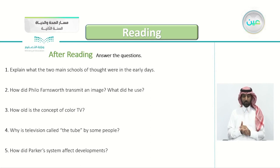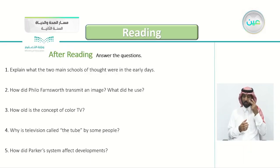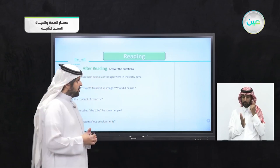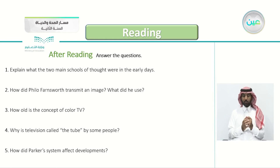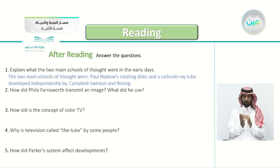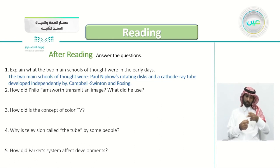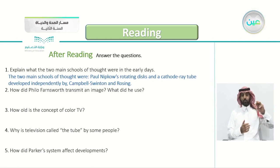Now for the after-reading questions. Question one: explain what the two main schools of thought were in the early days. The two main schools of thought were: first, Paul Nipkow's rotating discs supporting a mechanical television system, and second, the cathode ray tube developed independently by Campbell Swinton and Rosing.